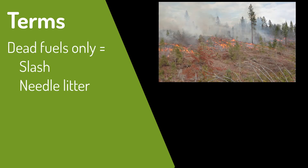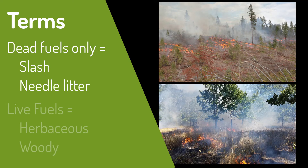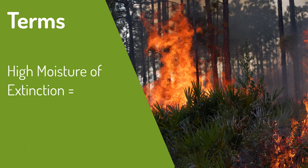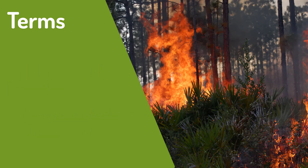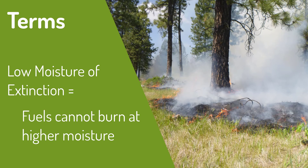A little background on some terms. Dead fuels only are things like slash and needle litter. Live fuels are herbaceous and woody fuels whose moisture content is tied to the season—see the videos on live and dead fuel moisture for more information. Fuels with a high moisture of extinction have extra volatile chemicals that allow them to burn even when fuel moistures are relatively high. Generally, fuel models with a higher moisture of extinction occur in the eastern and southeastern United States. Fuels with low moisture of extinction cannot burn at high moisture contents because they don't have the chemical content to keep burning.